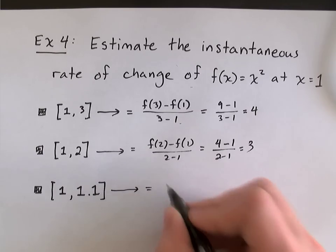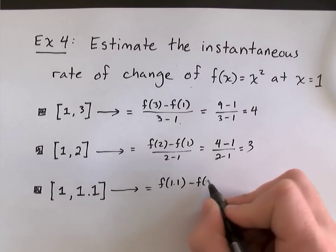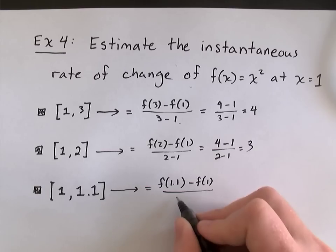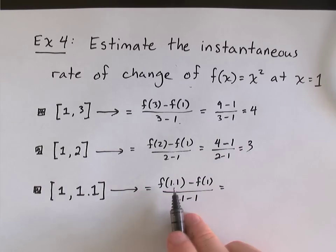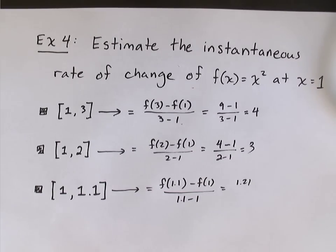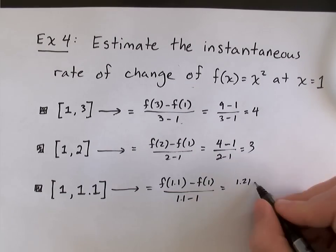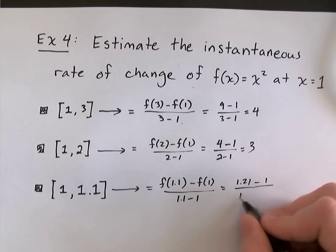Let's make the average rate of change again. It'll be f(1.1) minus f(1) all over 1.1 minus 1. Okay? So, if I square 1.1, I get 1.21. Just like if you square 11, you get 121. If you square 1, you get 1.